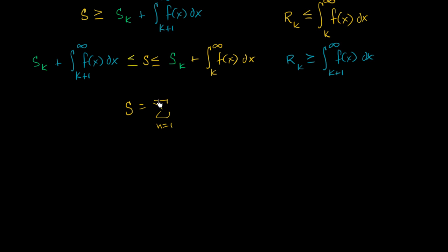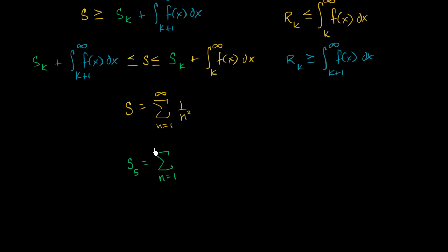Let's apply it to the infinite series from n equals one to infinity of one over n squared. We didn't know how to find the exact value, so we want to estimate it. We'll estimate it using the first five terms, so s sub five equals the sum from n equals one to five of one over n squared.